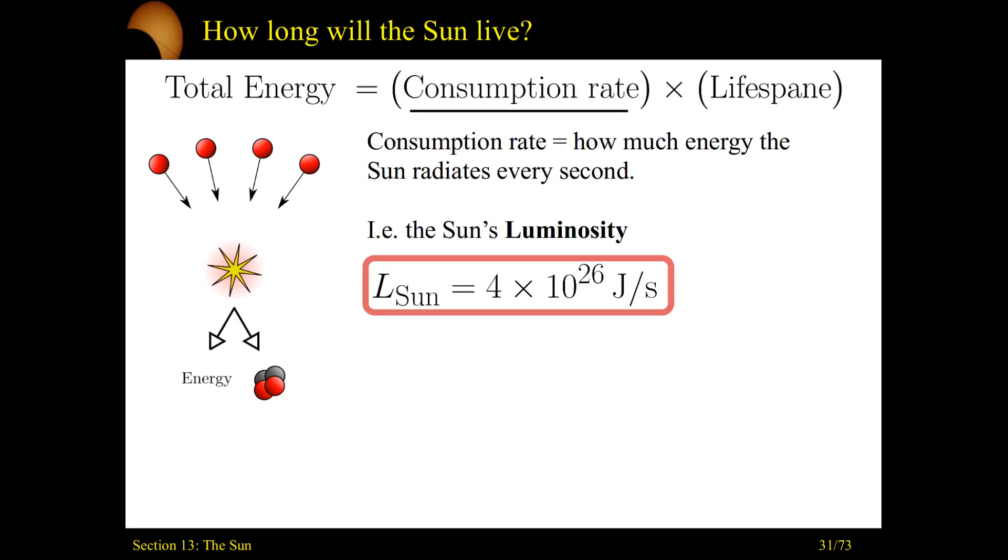And for the sun, we just say, hey, it's how much energy the sun is spitting out every second. We've defined this quantity before. It's the luminosity. The luminosity is how much energy per second a star is radiating away. So we look at our sun, we can easily measure this, and we say that the luminosity of the sun is about 4 times 10 to 26 joules per second.